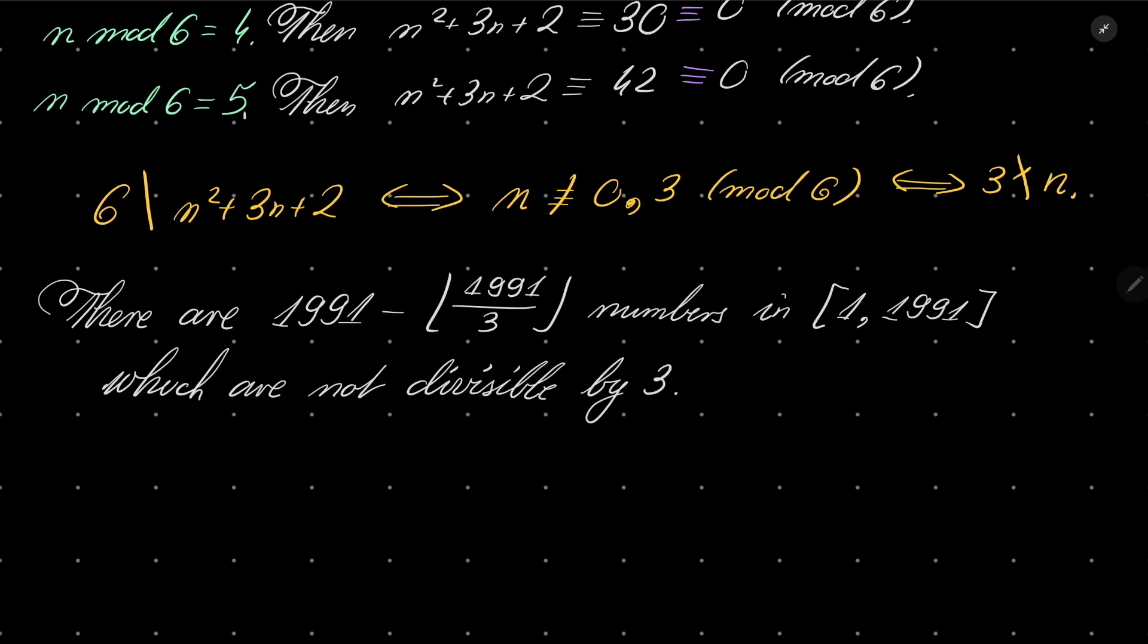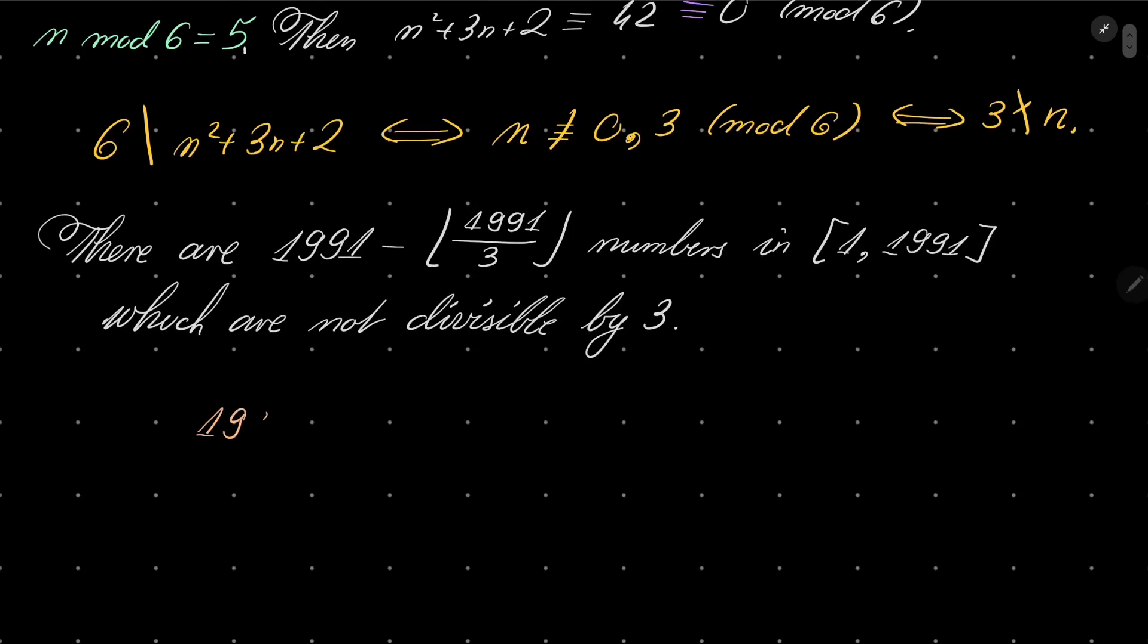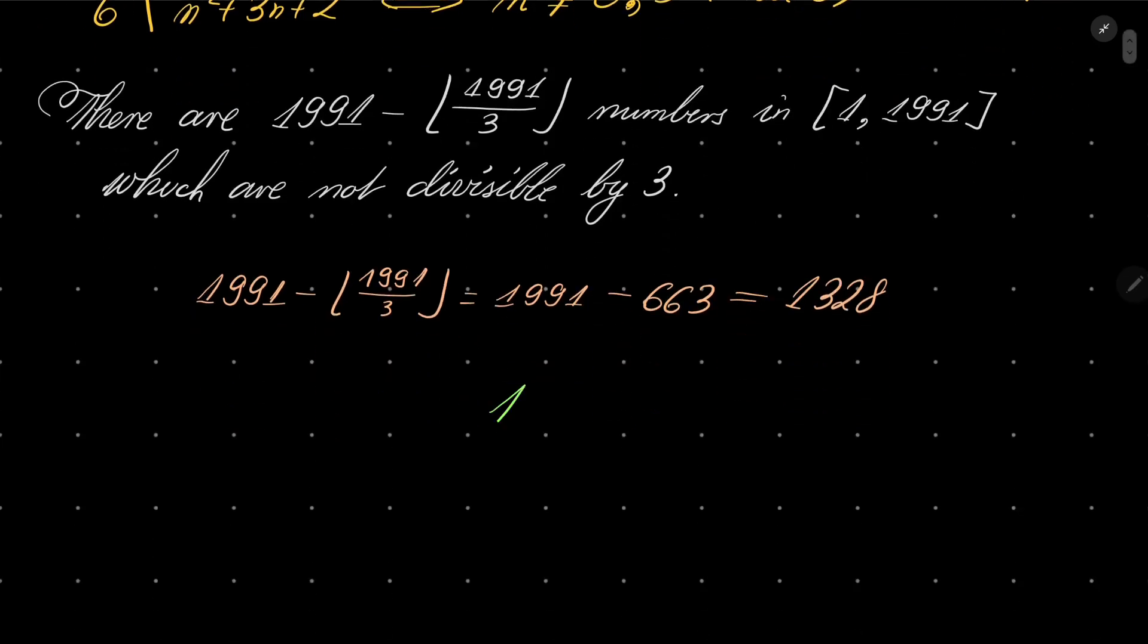Well, let's check it. 1991 over 3 is 663. So it's 1991 minus 663, and that is 1328. And that is our result: 1328.